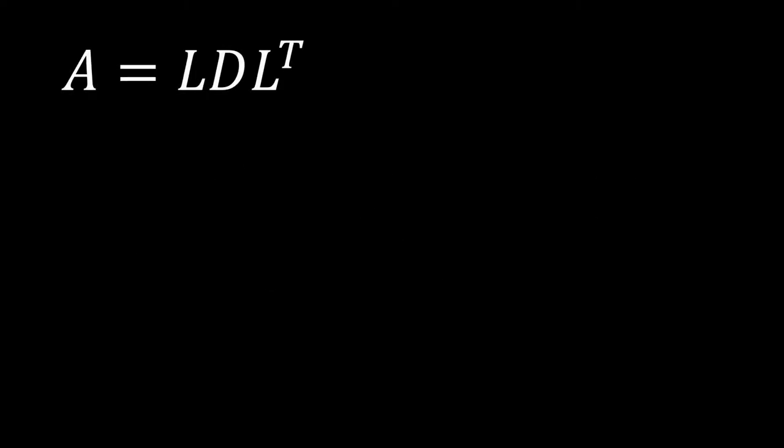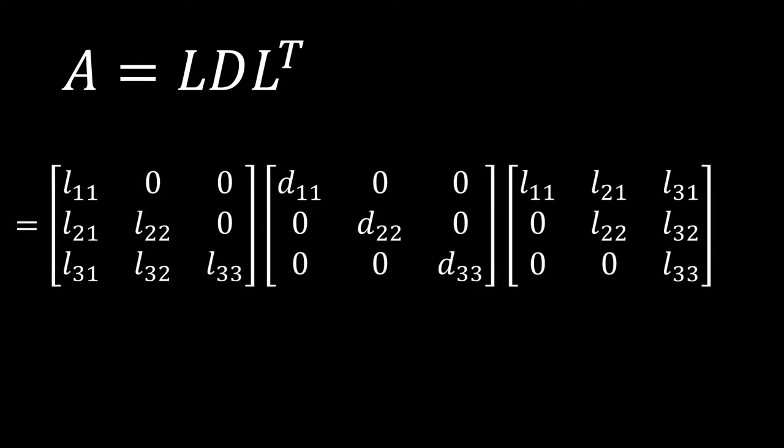Now, our LDL transpose matrix decomposition looks very similar. However, you'll notice one key thing. We need to keep track of one less matrix since our modified upper triangular matrix is now our lower triangular matrix transposed. Again, we want our diagonal matrix in the middle to have unique values in it. But now, with this higher level matrix decomposition, we need to keep track of one less thing, which really makes things a lot simpler.